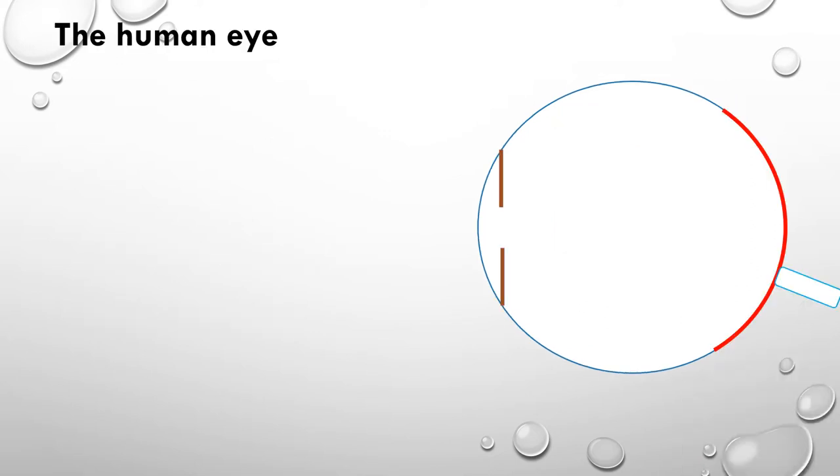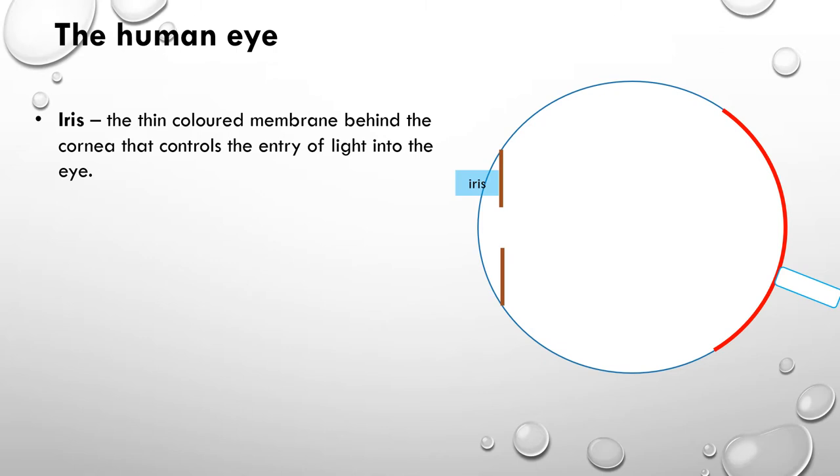Alright, so let's do a quick recap of the human eye. In the human eye, we have this thin colored membrane at the front called the iris. In front of it is a transparent layer of cells called the cornea. It protects the eye.